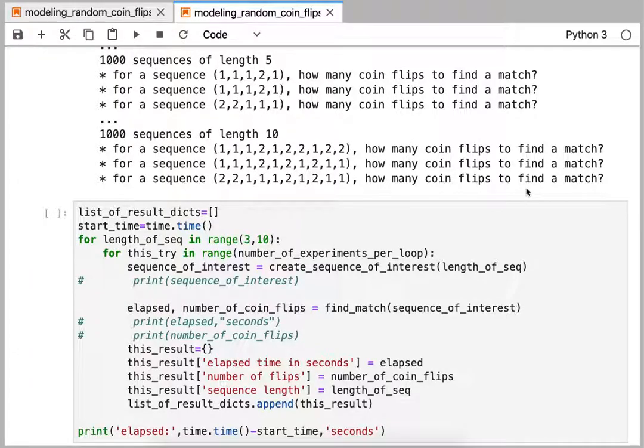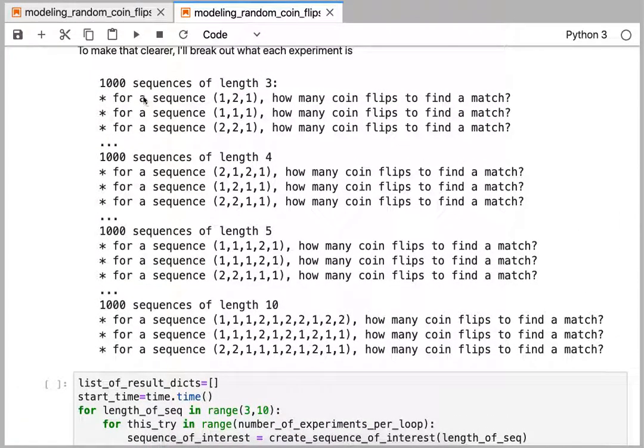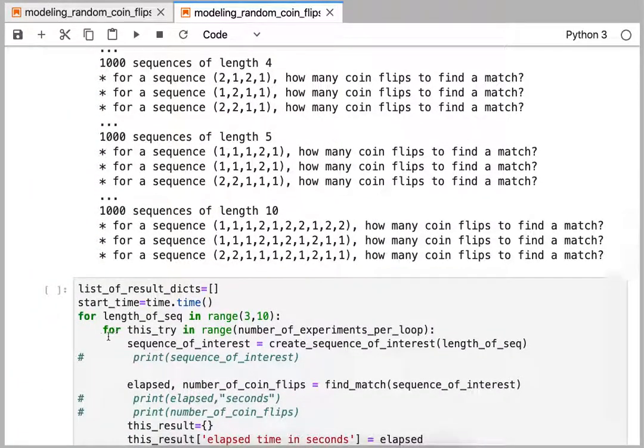To do that, we're going to have two nested for loops. So the outer for loop is the length of the sequence that's going to range from three to ten. And then we have to also have an index for each of these experiments here. So this is for a sequence of length three of one to one thousand, how many coin flips? So that's this inner loop here.